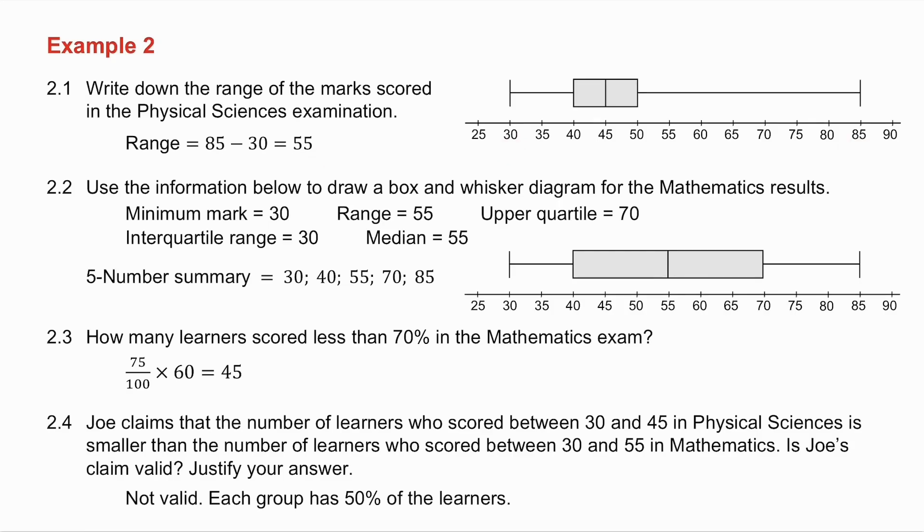They then ask me to draw a box and whisker diagram for the mathematics results. The minimum mark is 30. They tell me that the range is 55, so that means that from the minimum value to the maximum value is 55. So the maximum value is 85. The upper quartile is 70. They then tell me that the interquartile range is 30. Now your interquartile range is the upper quartile minus the lower quartile. So 70 minus what is 30? So that's where I get the lower quartile being 40.